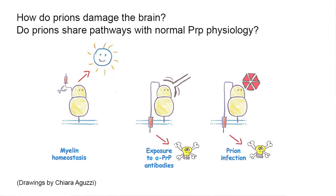The normal prion protein is attached to the membrane with a glycolipid anchor. It contains a globular domain as well as an unfolded, unstructured flexible tail. Under normal conditions, we believe that the flexible tail is important to transmit a neurotrophic signal.